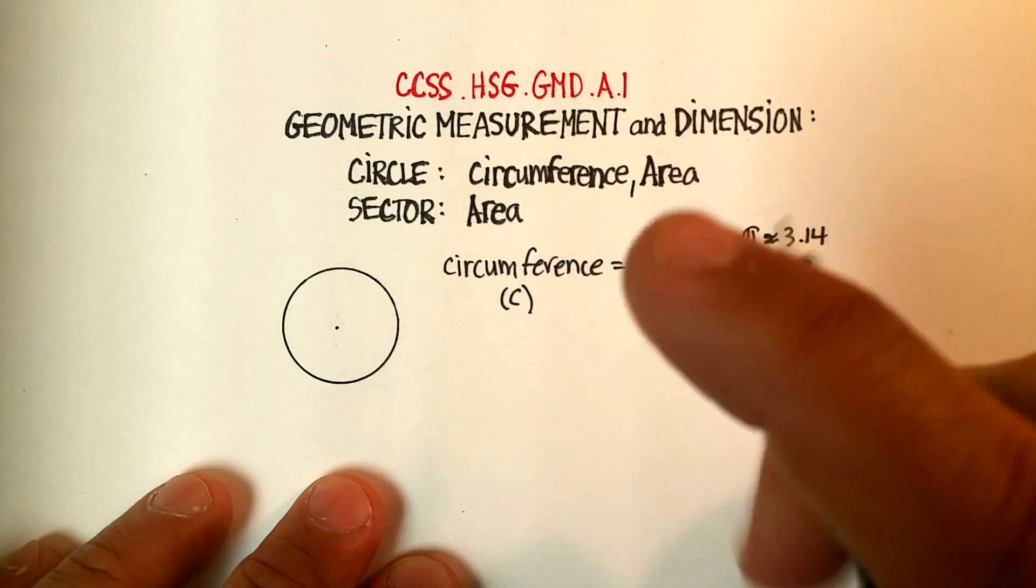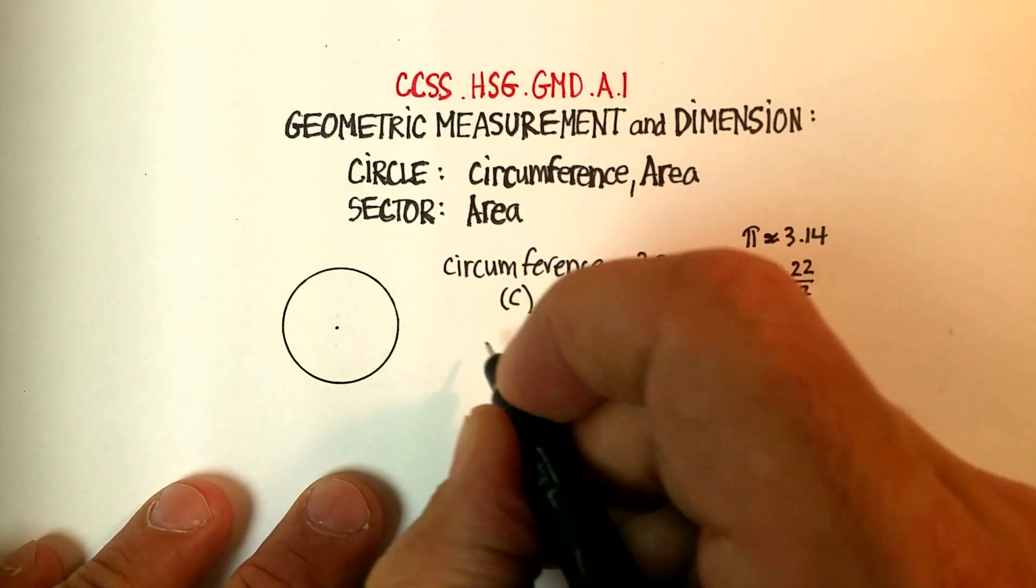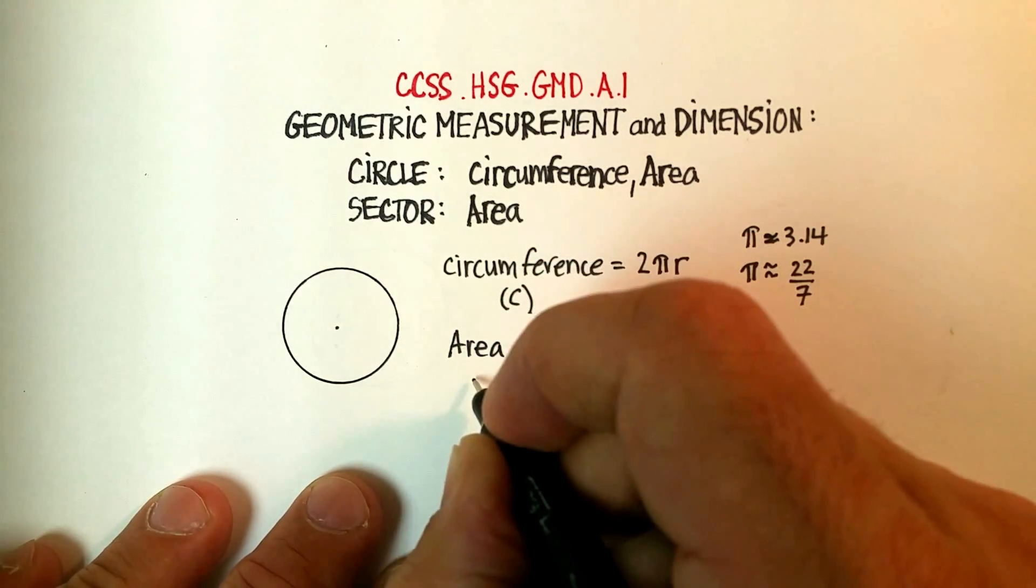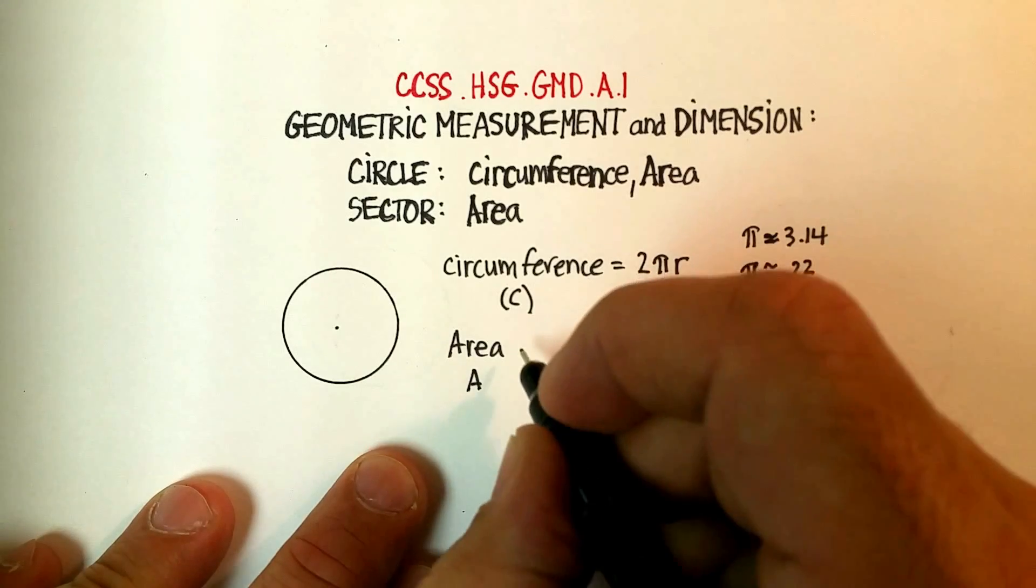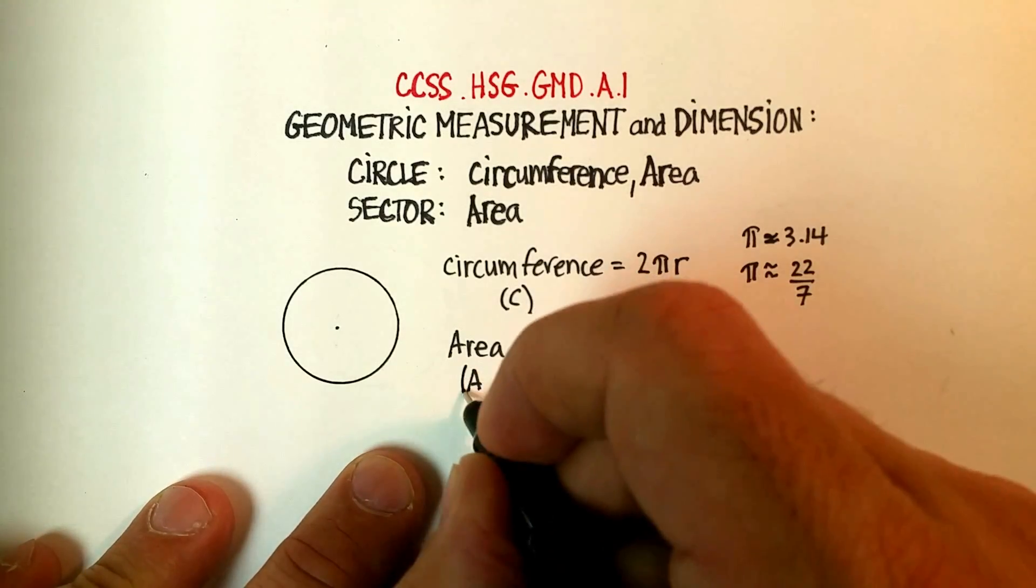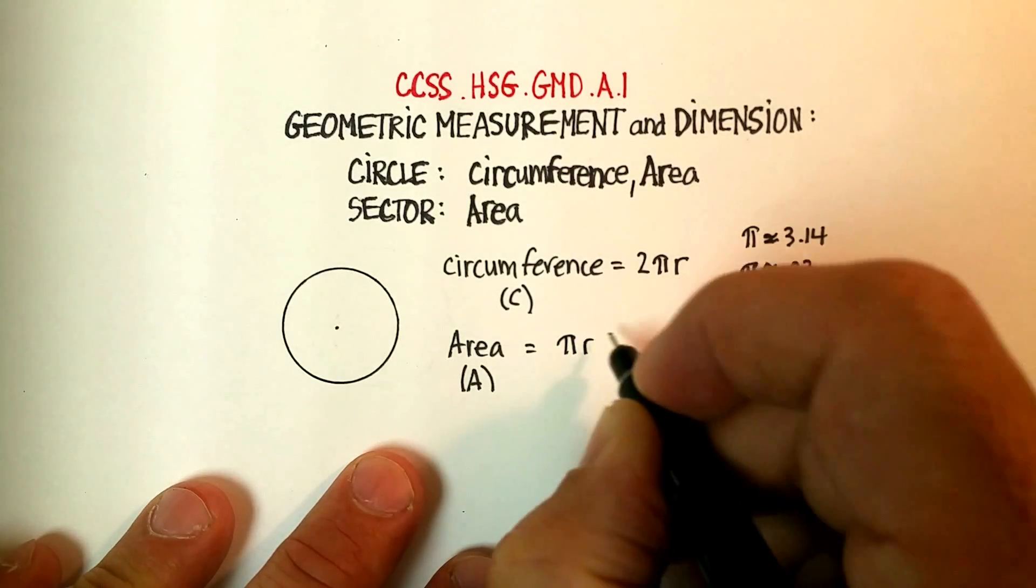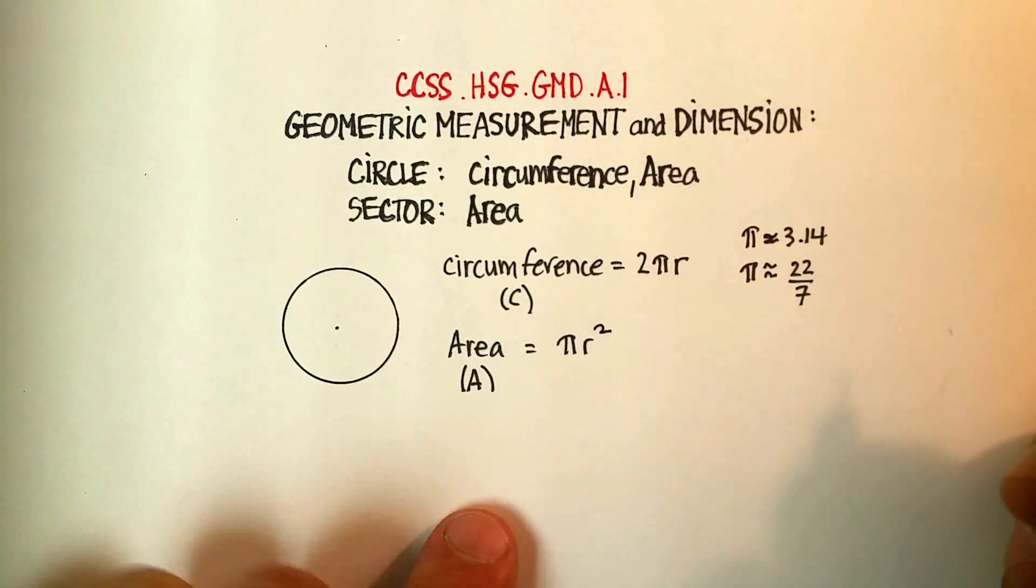Now the area of a circle, how much area it covers, we always usually write that as large A, not small a, but large A, and that's equal to πr².